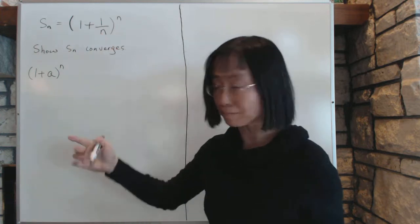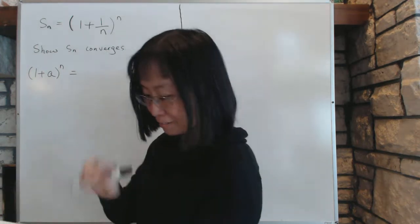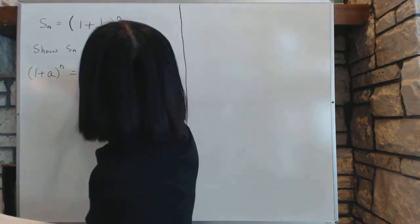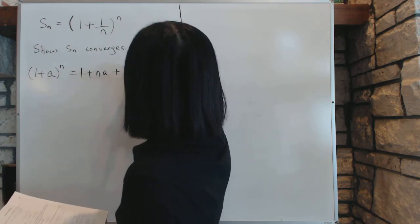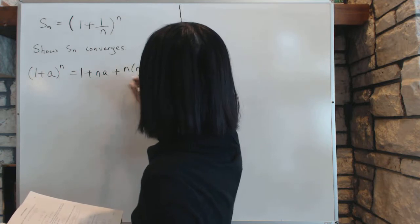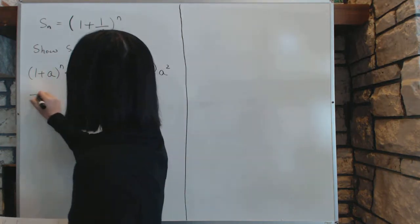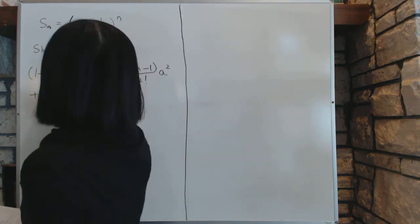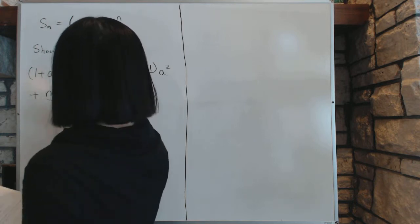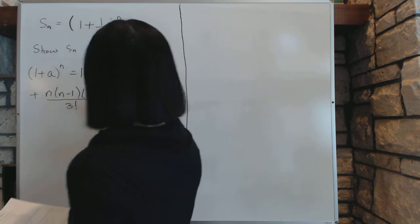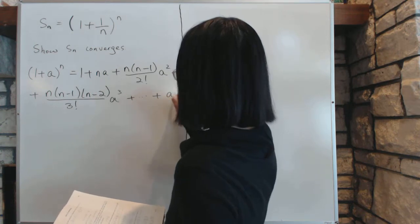By the binomial expansion — that's the name of this expansion — we get: 1 plus n times a, plus n times (n minus 1) divided by 2 factorial, and that's a squared. The third term is n times (n minus 1) times (n minus 2), divided by 3 factorial, and that's a to the power 3. And you keep going all the way up to a to the power n.